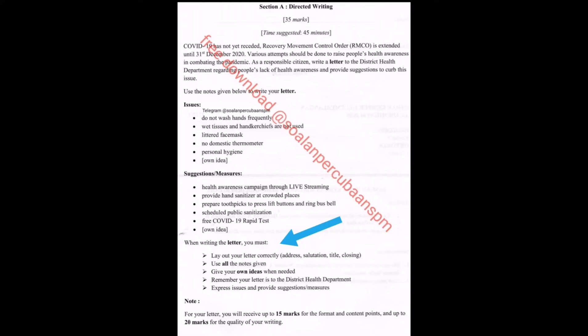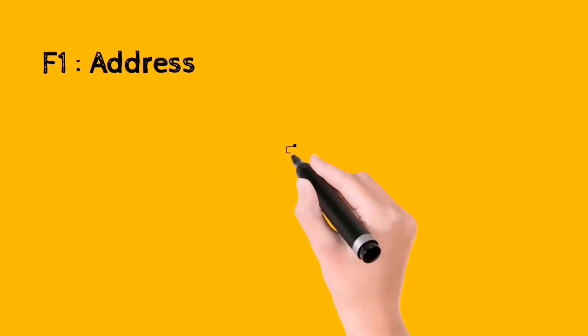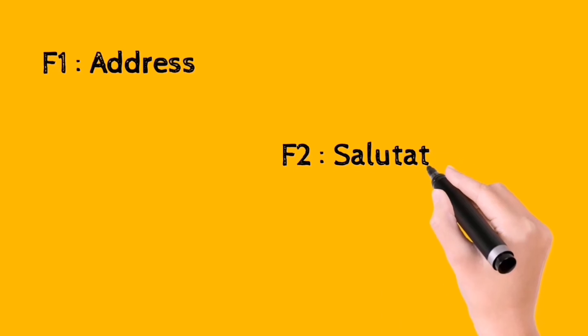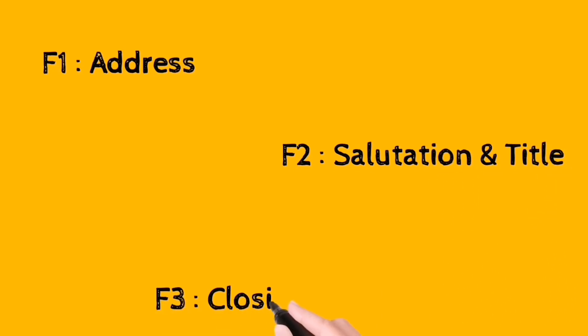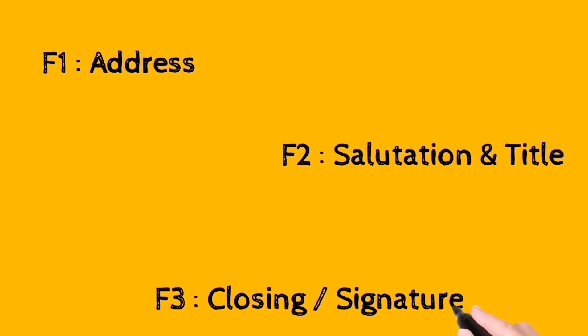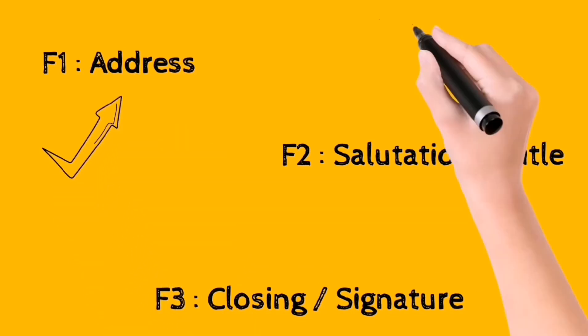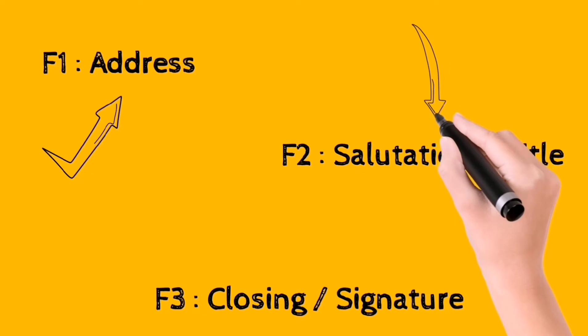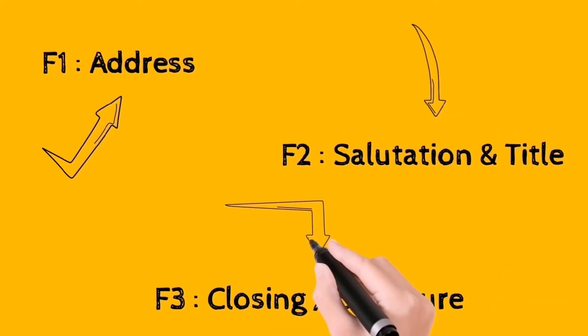All the main ideas are already given. As a friendly reminder, you have to lay out your letter correctly — all four things: address, salutation, title, and closing. The format is divided into three: F1 is for address, F2 is for salutation and title, and F3 is for closing and signature.